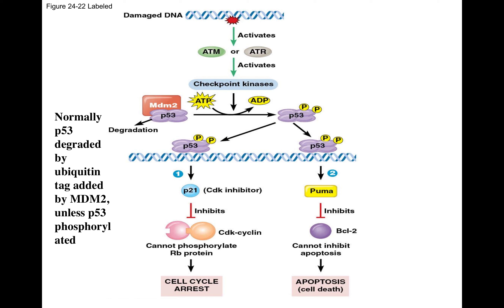After spending time in G1, or if you're a terminally differentiated cell in G0 for a long period of time, you can be exposed to environmental forces such as solar radiation that could mutate the DNA. This is DNA you do not want to replicate until you fix it. DNA damage will activate a system called ATM or ATR, depending on the type of damage, and that will activate a kinase.